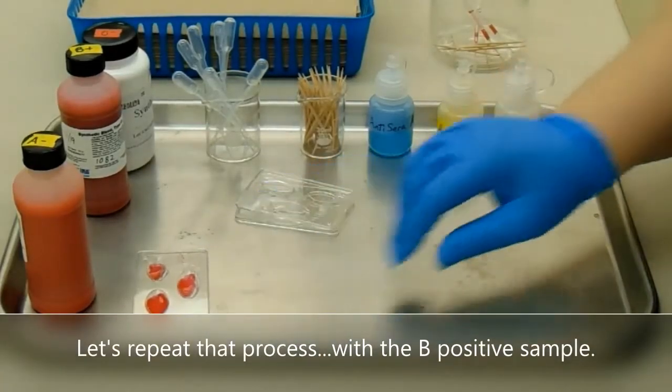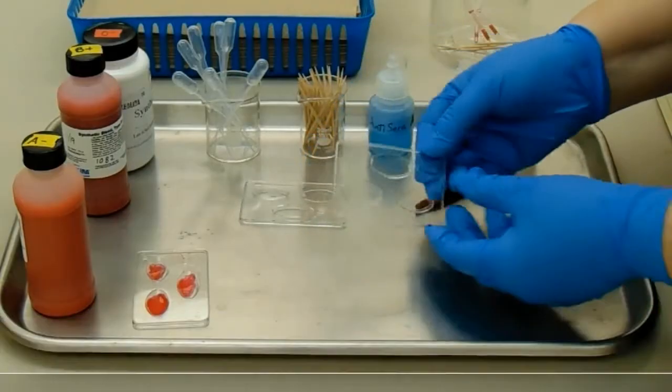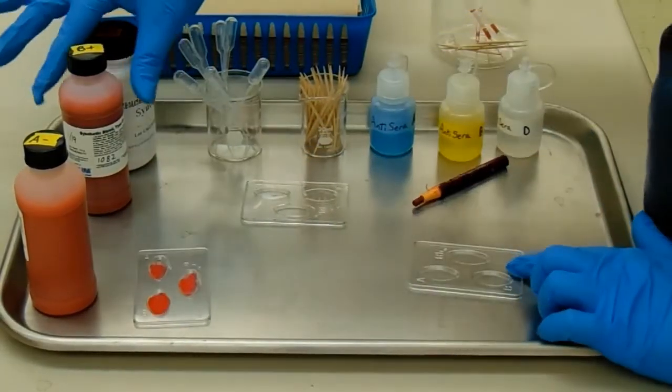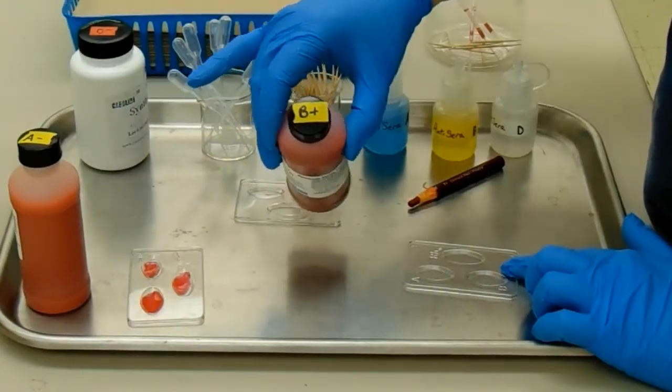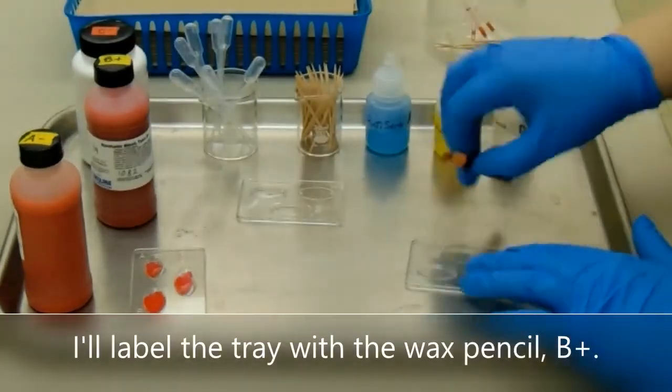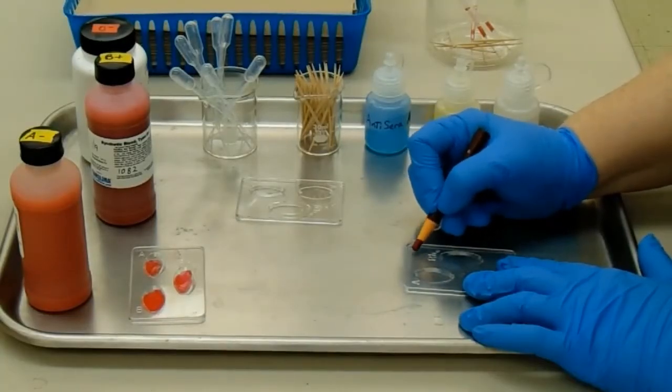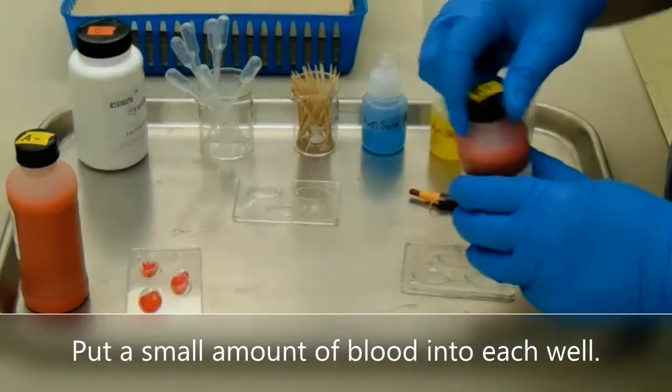Let's repeat that process with the B positive sample. I'll label the tray with the wax pencil B+. Put a small amount of blood into each well.